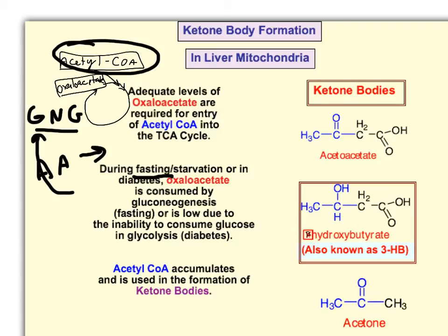In the same vein, you get the same thing happening whenever you have diabetes. Because in diabetes, you can't bring in glucose, so your oxaloacetate is going to be low due to the inability of the liver to consume glucose.